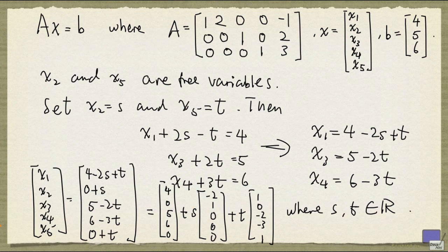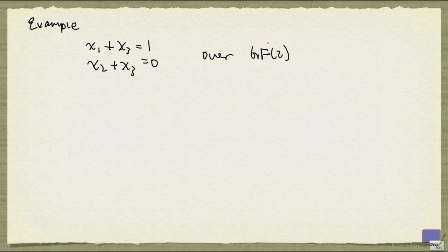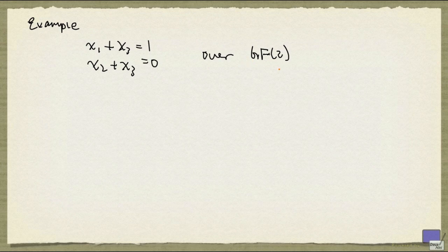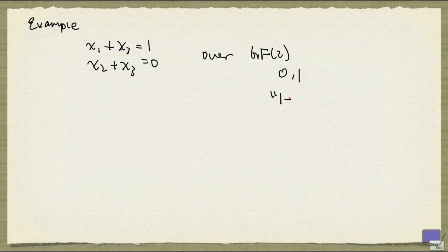Now let's look at another example. And this time we're going to define the system over GF2. x1 plus x3 equals 1, and x2 plus x3 equals 0. Now, remember that GF2 is the field with only 0 and 1 as elements. And 1 plus 1 is defined to be 0. All the other operations are as usual. So here, if you look at this system, x3 is a free variable,